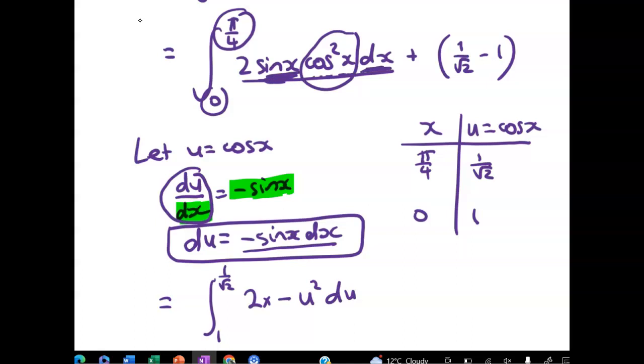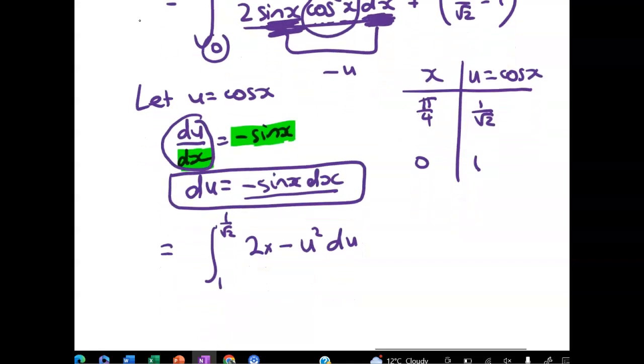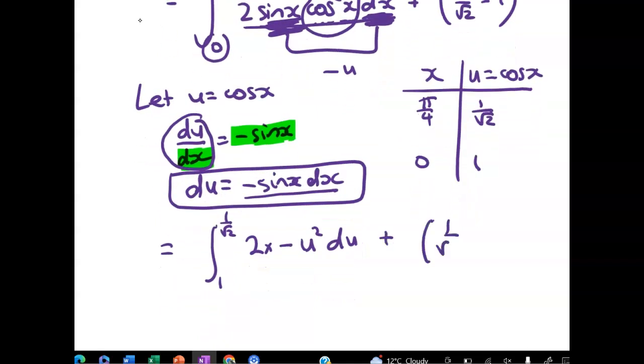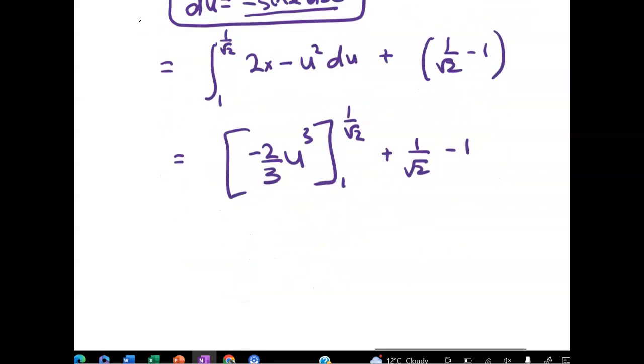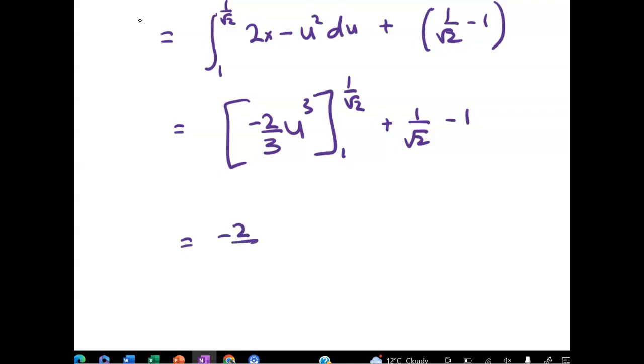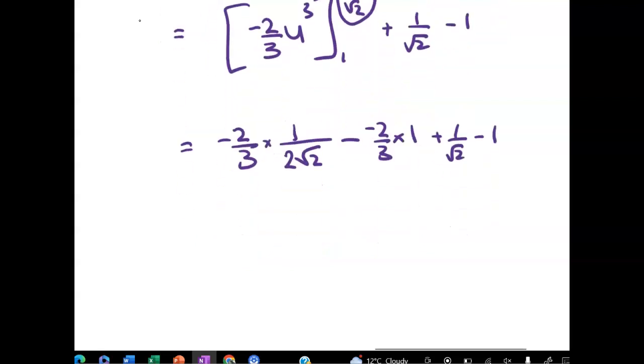Right, and then I've got plus the bit that I've already worked out. And you can see now that this is a really, really easy integration. It's just negative 2 thirds u cubed evaluated at these limits. Right, that gives me negative 2 thirds times 1 on root 2 cubed is 2 root 2 minus negative 2 thirds times 1 plus 1 on root 2, take away 1. That gives me negative 1 on 3 root 2 plus 2 thirds minus 1.